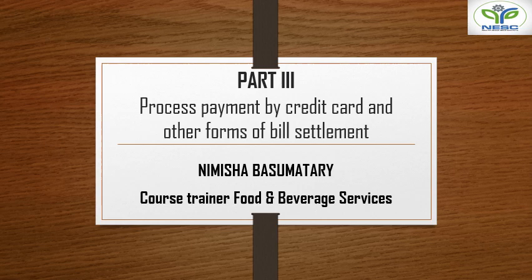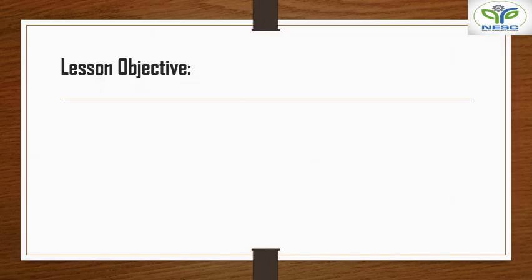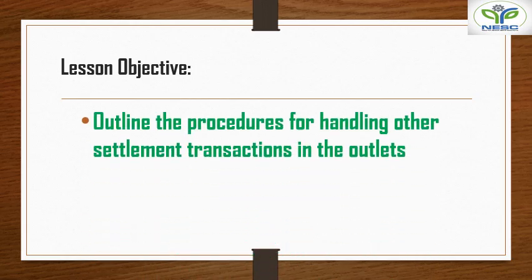Hello students, welcome to NSA online classes. I am Isa Basmatari, course trainer of Food and Beverage Services. We will continue with the third part of Unit 4: Process Payment by Credit Card and Other Forms of Bill Settlement. The lesson objective is to outline the procedures for handling other settlement transactions in the outlets. In our previous topic we discussed credit card, debit card, and cash settlement, so now we will discuss all other procedures for handling transactions.